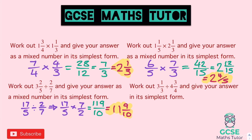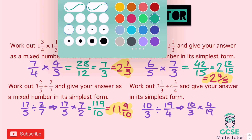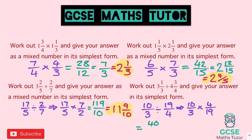Last question: three and a third divided by four and three quarters — give your answer in its simplest form, so no mixed number needed. Three and a third: 10 thirds. Four and three quarters: 16 plus three is 19 quarters. Keep 10 over 3, flip to four over 19, multiply. Top: 10 times four is 40. Bottom: three times 19 — three times ten is 30, three times nine is 27, total 57. So 40 over 57. Does that simplify? No common factors, so the final answer is 40 over 57.